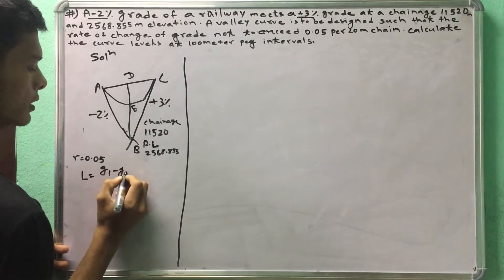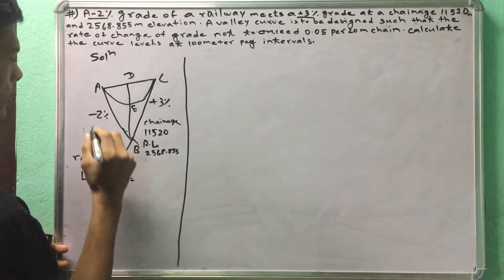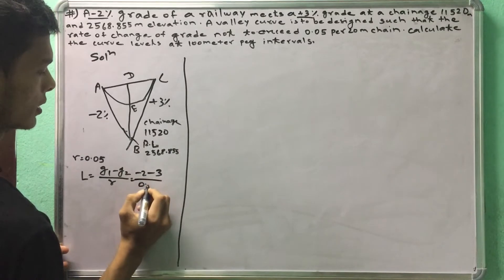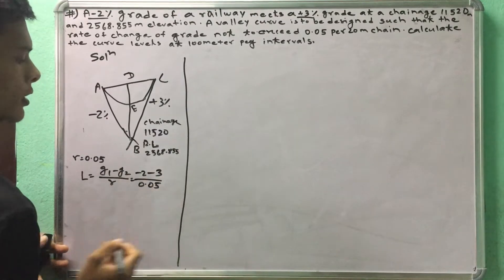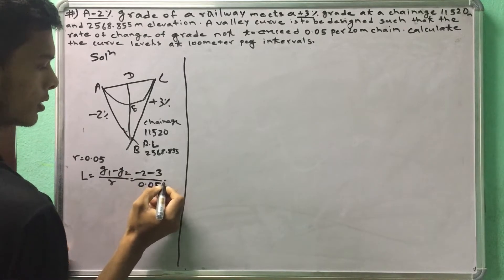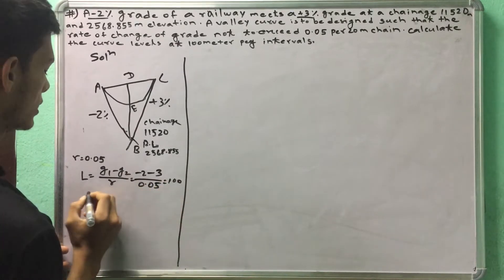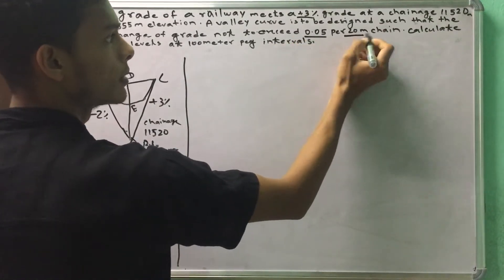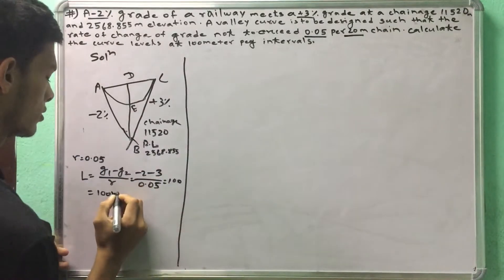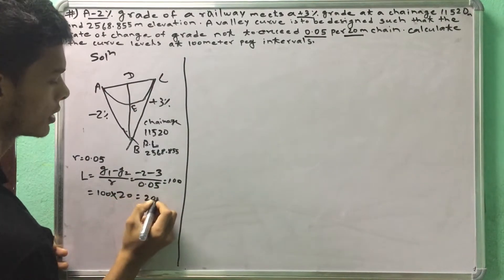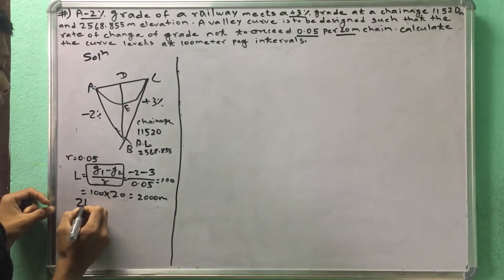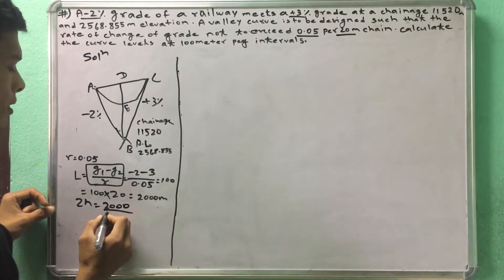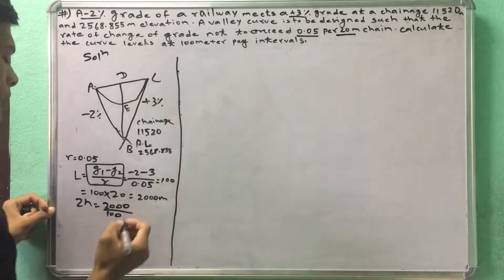g1 minus g2 by r — how much is g1? Minus 2, minus 3, divided by 0.05. We have 100 in our range, we have 20m to multiply, we have 200 divided by 100.